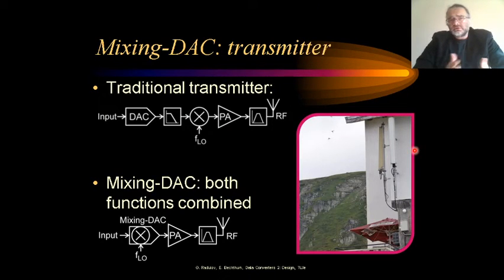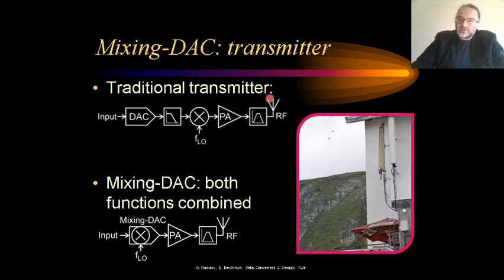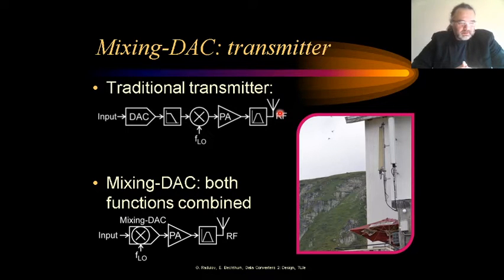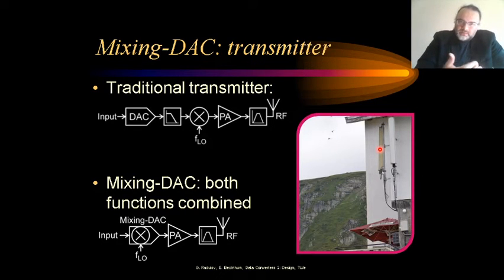The application context is of course the transmitter. We have here a traditional transmitter starting from digital, having a digital-to-analog converter, some reconstruction filters, a mixer and a power amplifier which generates a lot of power, some additional filters and the antenna. This is how most of today's wireless transmitters work. For mobile communication, you are all familiar with these big antennas which you can see in the cities. These are big because they generate a lot of power, and you need power in order to reach targets which are far.